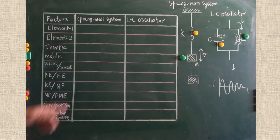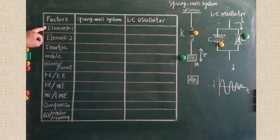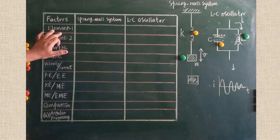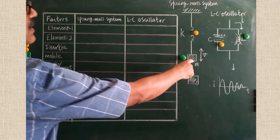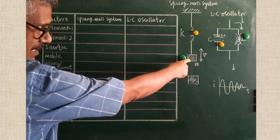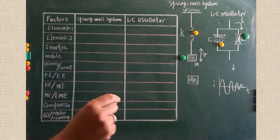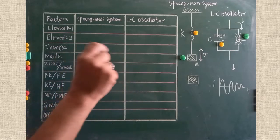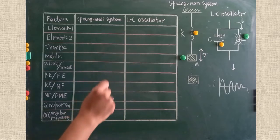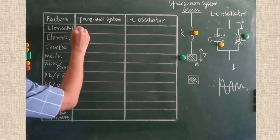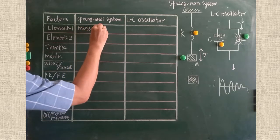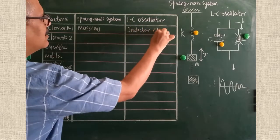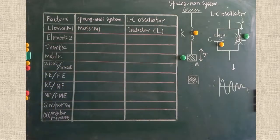Look at the tabular column with several factors to be compared in both systems. The first factor is element — the component connected in both systems. The mass tied up can be compared with L, the self-inductance of the coil, because mass determines the inertial factor in the spring-mass system, and L determines the inertial factor in the LC circuit. Therefore, mass M can be compared with inductance L.